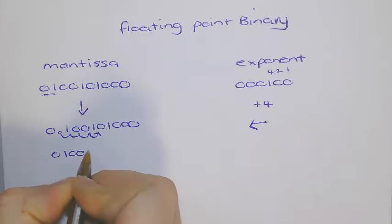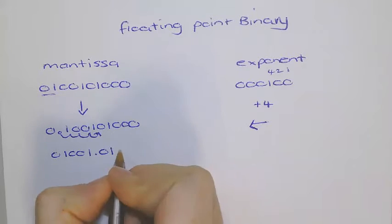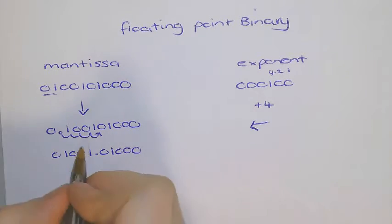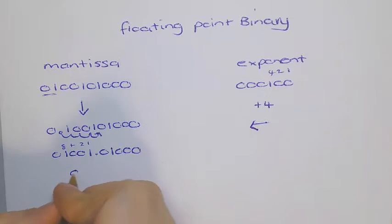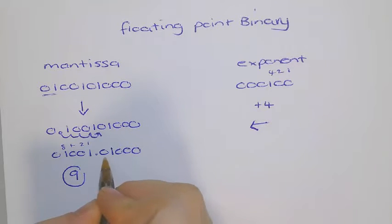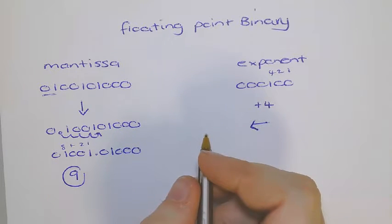what you would end up with is 0, 1, 0, 0, 1, 0, 0, 0. Now, 1, 2, 4, 8. That is 9. We know that that number is now 9. But then after that, you've got the point, and each point, just to show you, represents a different value.